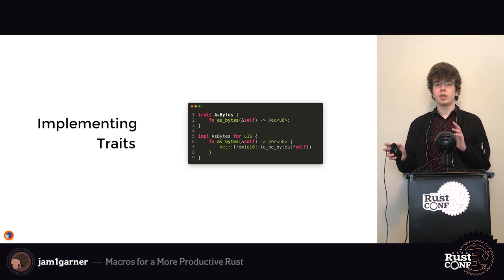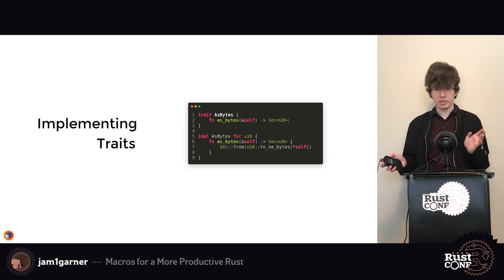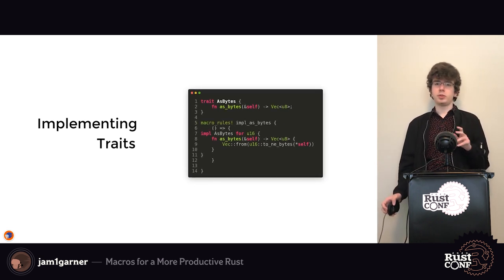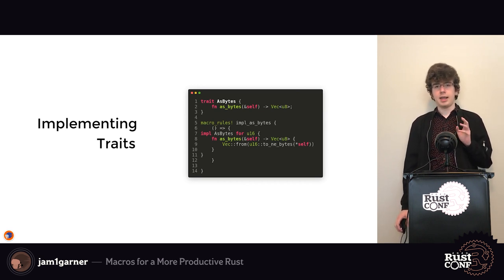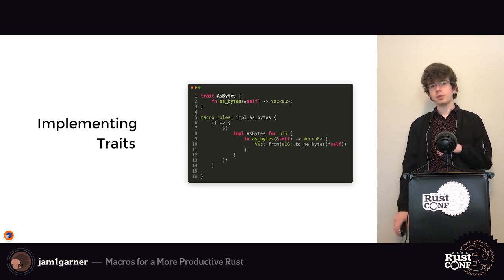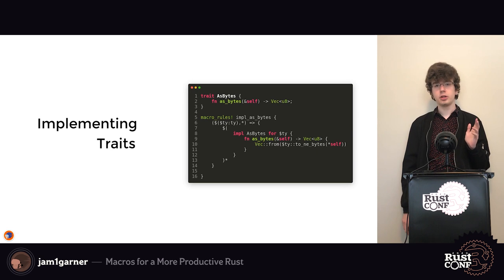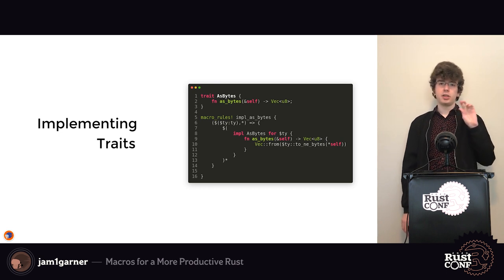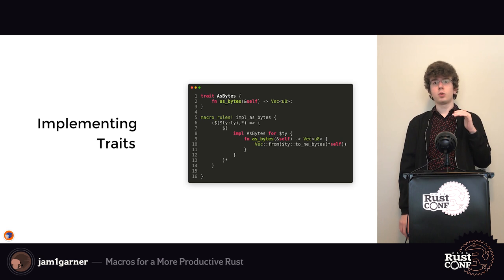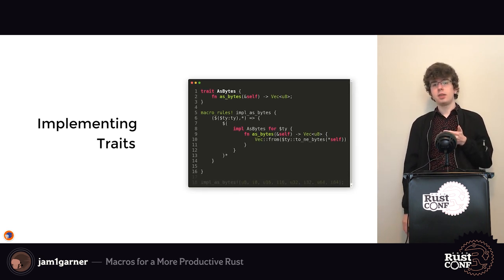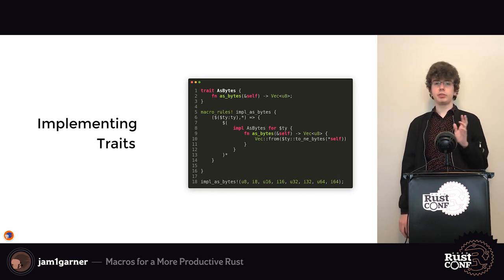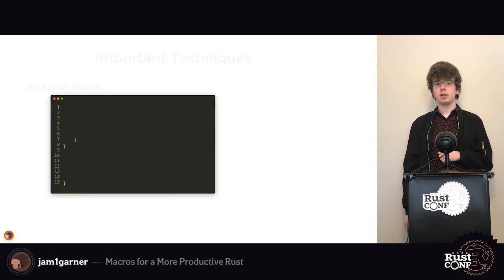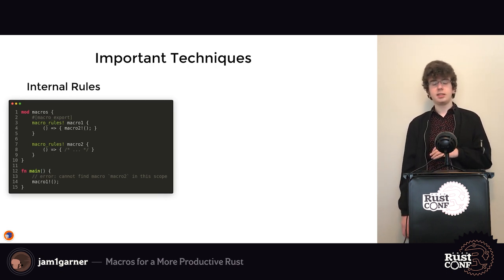We can remove that repetition by using macro repetition to implement the trait for all integer types at once. We wrap our example implementation in a macro, set it to repeat, make the pattern match against repeated comma-separated type names, then replace every instance of u16 with our type name. Calling it with all the types generates implementations for all of them, leaving only one templated implementation to maintain.